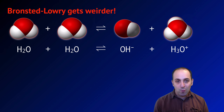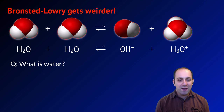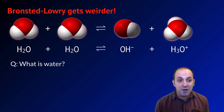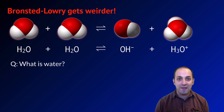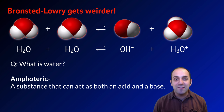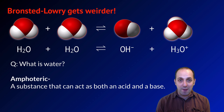The Bronsted-Lowry definition gets even weirder. Here we see two water molecules, and the question is: what is water — is it an acid or is it a base? The answer is that it's actually both. In the forward reaction, one water molecule donates a proton to the other water molecule. The proton donor is the acid, and the proton acceptor is the base. This is totally allowable in Bronsted-Lowry definitions. The term for this is an amphoteric substance — any substance that can act as both an acid and a base in Bronsted-Lowry chemistry.